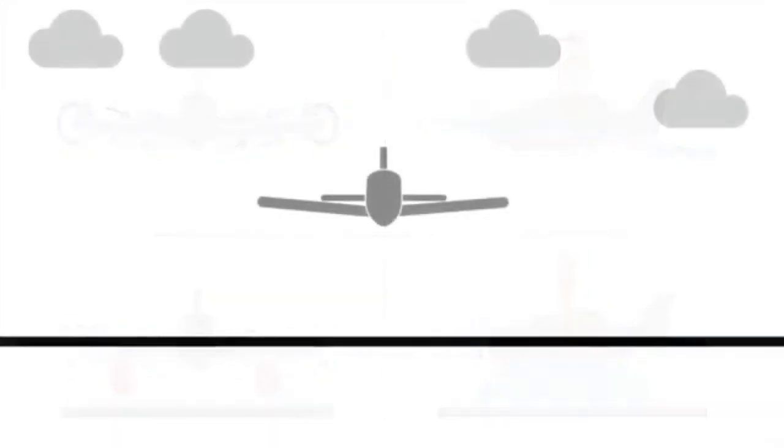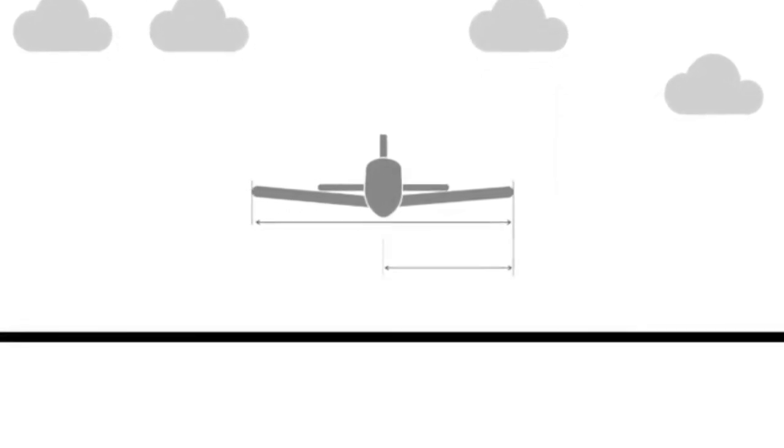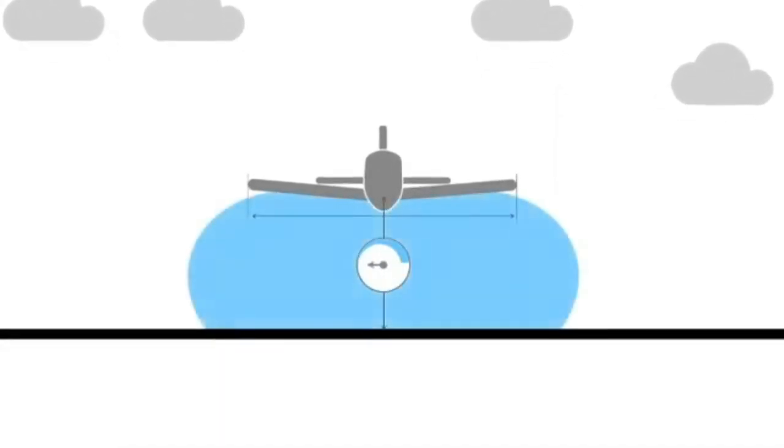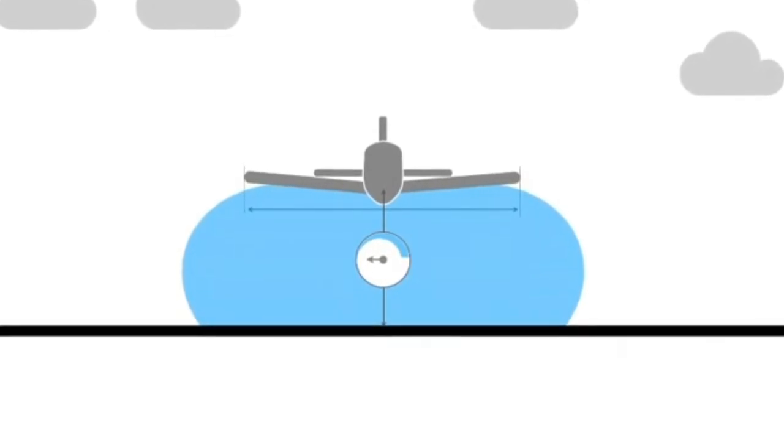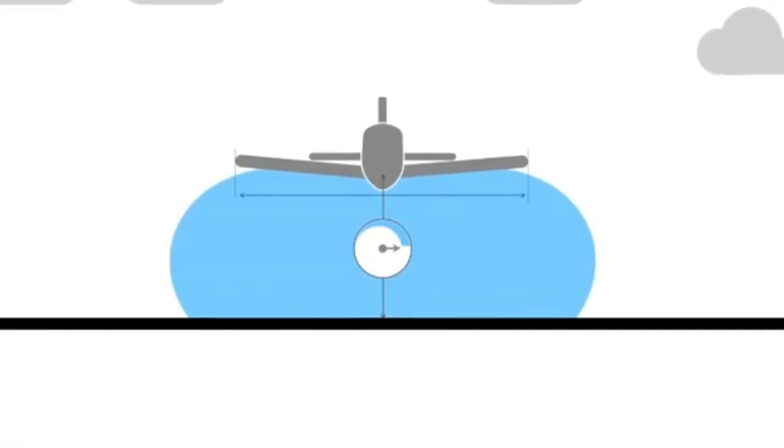Ground effect is most noticeable when the aeroplane is flying above ground at a height of less than half its total wingspan. The effect is stronger the closer the wings are to the ground surface.